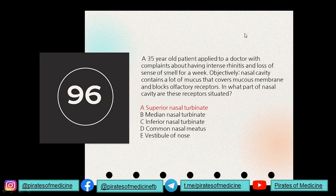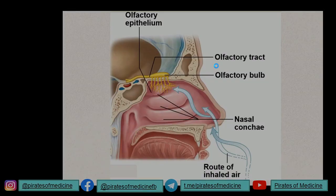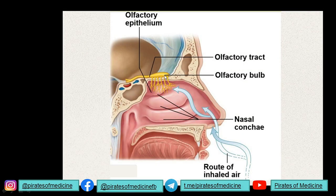Question 96: a 35-year-old patient has intense rhinitis and loss of the sense of smell for a week. The nasal cavity contains a lot of mucus that covers the mucous membranes and blocks the olfactory receptors. We need to know the location of these receptors. The olfactory bulb gives out olfactory receptors and the epithelium on which they are located is called the olfactory epithelium.